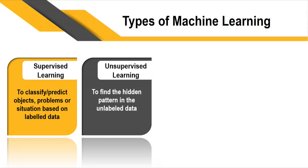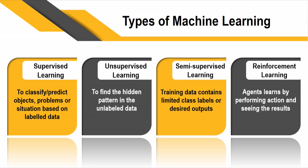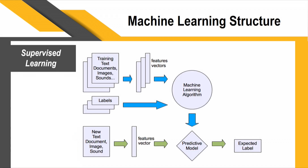There are two broad categories of learning: supervised learning and unsupervised learning, with semi-supervised and reinforcement learning as additional categories. Supervised learning is used to classify or predict objects, problems, or situations based on labeled data. We provide the system with training documents, sounds, or images; features are extracted and provided to the algorithm along with labels, and the machine predicts the output.